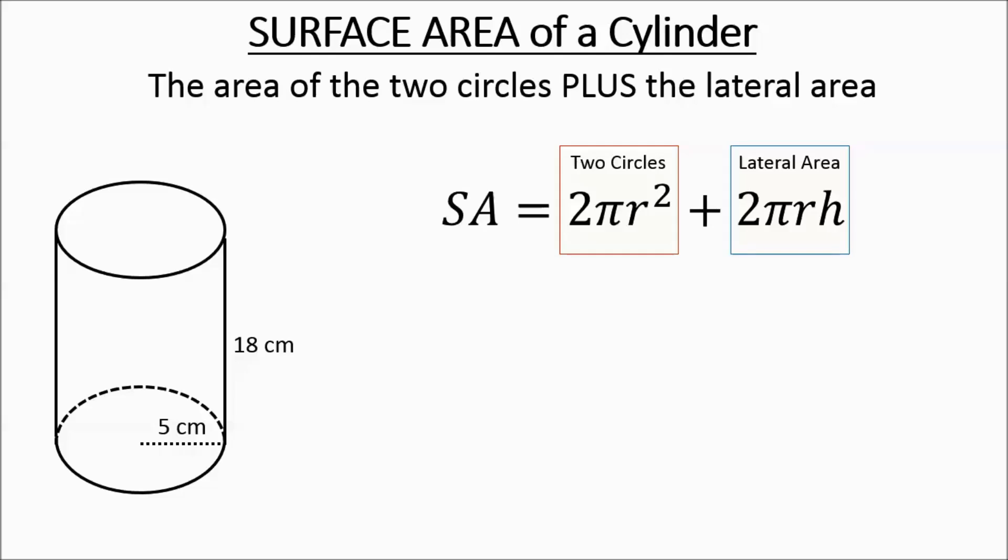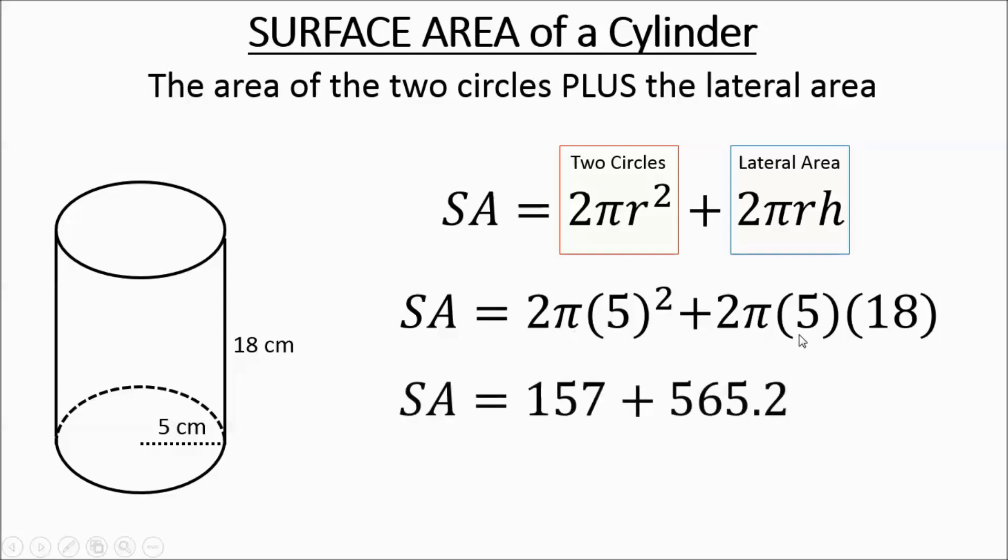So what you do is you set it up, you plug in your numbers, you plug in 5 for your radius, 18 for your height. In the first part, make sure you do your 5 to the second first, and then multiply by 2 and by 3.14. For the second part, you can go 2 times 3.14 times 5 times 18.